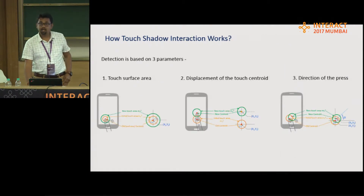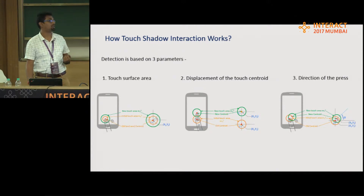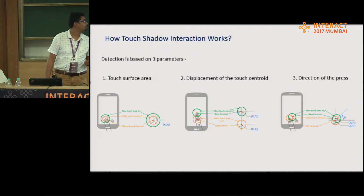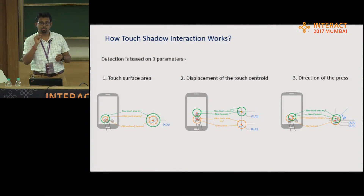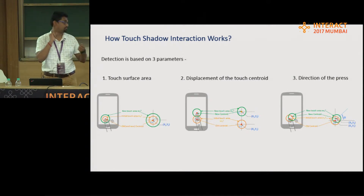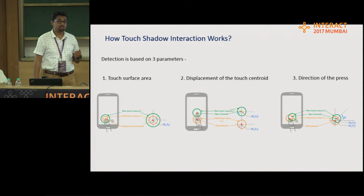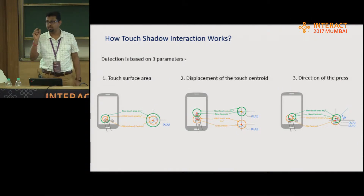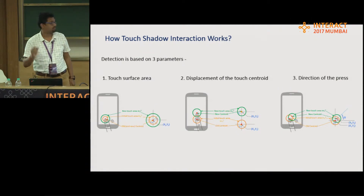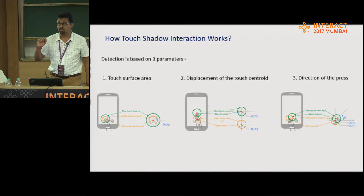The way we are detecting this is by three parameters. The first is surface area — that is the area of the surface which gets touched to the display surface, which is being detected and the interaction happens based on that. The second parameter is the displacement of the touch centroid point of the surface. And the third one is the direction in which you are holding your finger.